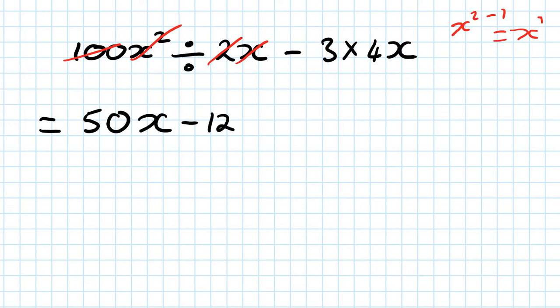And then 3 times 4 is 12, so minus 12x. Then collect like terms: 50 minus 12 — 50 minus 10 is 40, 40 minus 2 is 38 — so your answer is 38x. Otherwise just use your calculator.